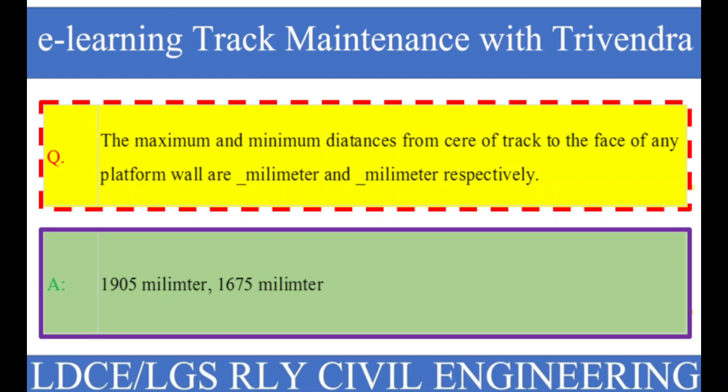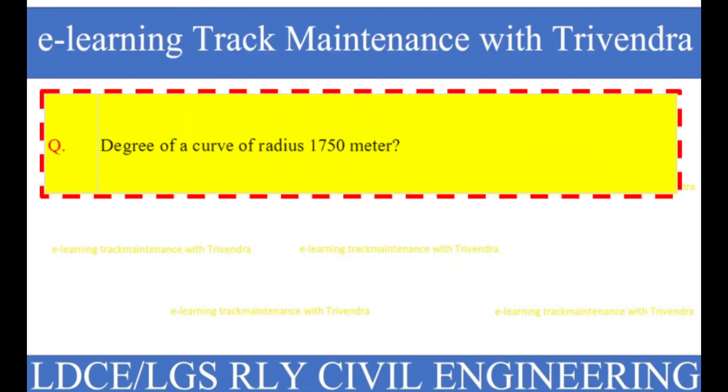Question number 68: Degree of a curve of radius 1750 meters? The right answer is one degree.